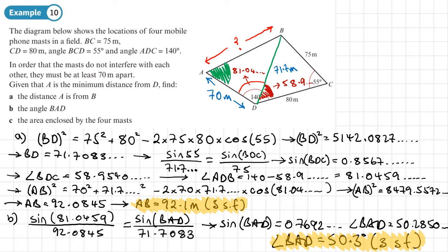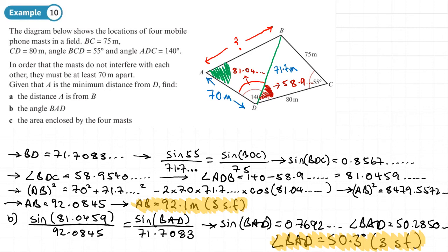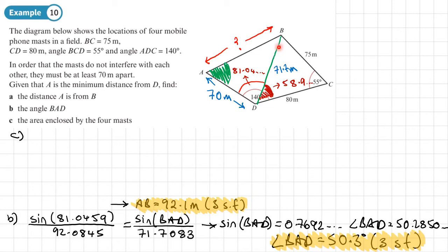Okay, let's move on to part C. And part C is asking us to find the area enclosed by the four masts. So the way we're going to do this is we're going to work out the area of these two separate triangles. So this one here.